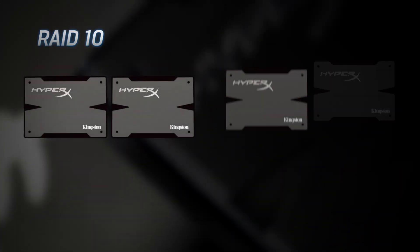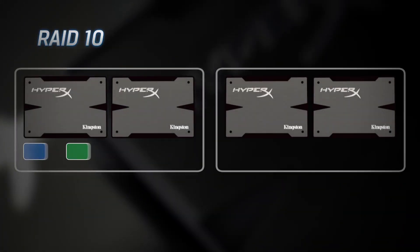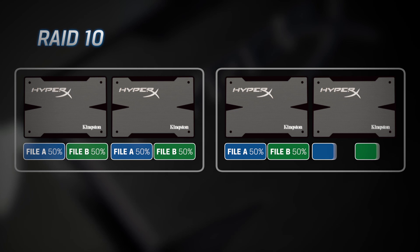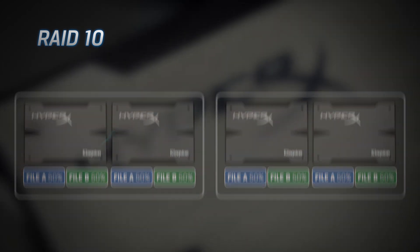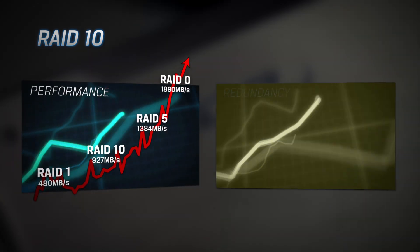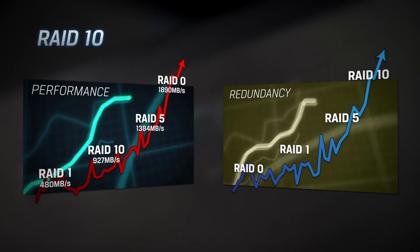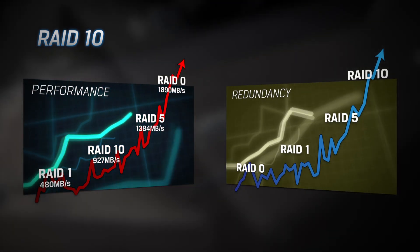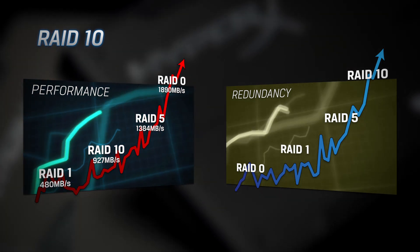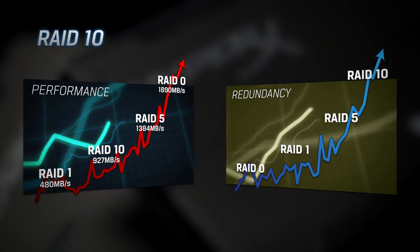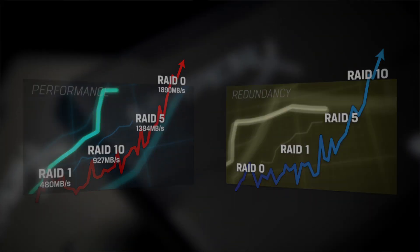RAID 10 is a combination of RAID 0 and 1. RAID 10 offers fast write performance and redundancy. However, you sacrifice half the capacity of the drives you have built into your RAID 10 array. This can be more expensive to implement for larger data sets.